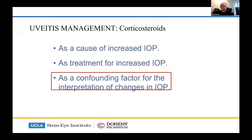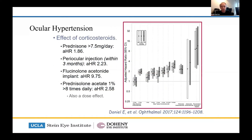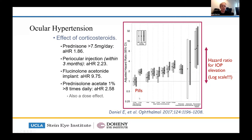You've got to have a strategy for dealing with what steroids do to the pressure. This shows the hazard ratio for IOP elevation: if you're on more than 7.5 mg per day of prednisolone, this is the risk; less than 7.5 mg shows less. Eye drops increasing from one drop a day to more than two-hourly, periocular injection, intraocular injection, and Iluvien/Retisert fluocinolone implants all show escalating risk — on a log scale, that's a four-fold, 16-fold, and 32-fold increase in pressure respectively.